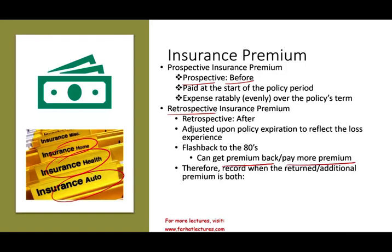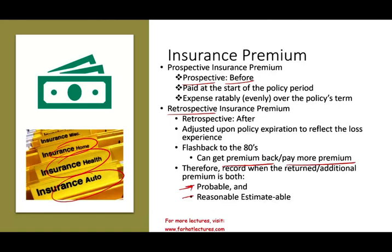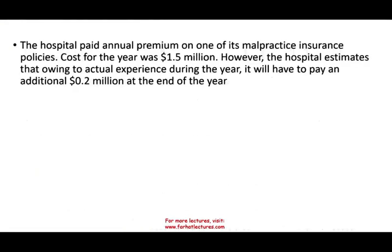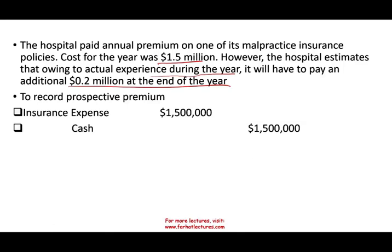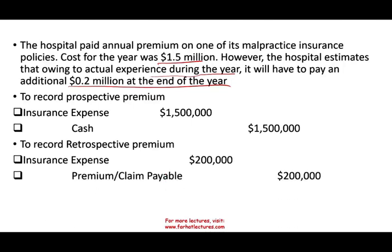When we record this additional premium, we treat it as a contingency — we estimate it and assess whether it's probable. If it's probable and reasonably estimable, we book it. For example, the hospital paid $1.5 million in premiums for the year — debit insurance expense, credit cash. However, the hospital estimates that owing to actual experience during the year, it will have to pay an additional $200,000. To record the retrospective adjustment, they debit an expense again and credit a payable — some sort of liability. That's how insurance premium works.